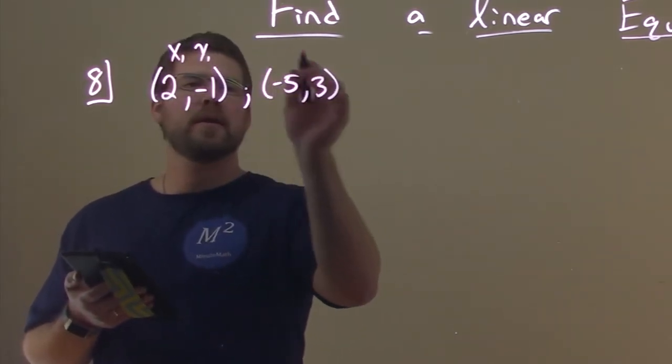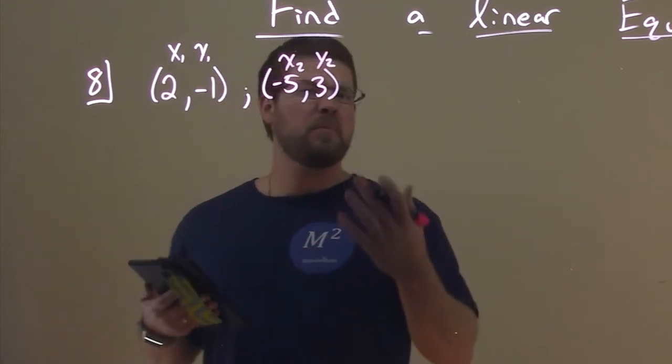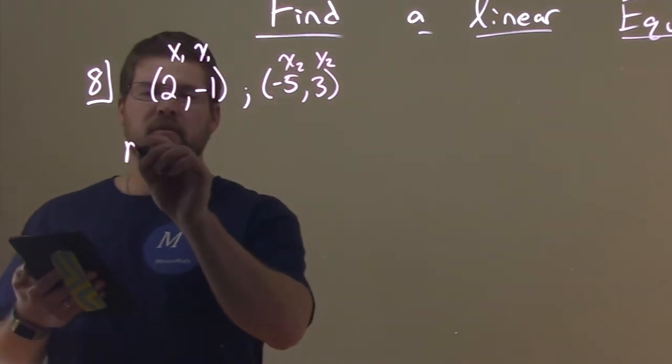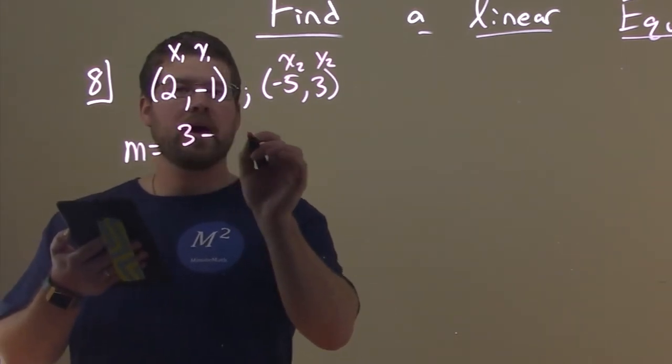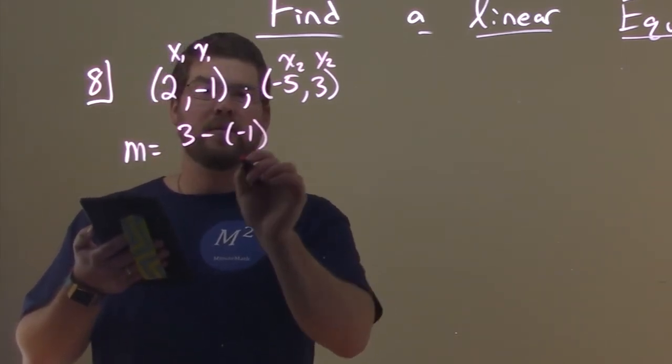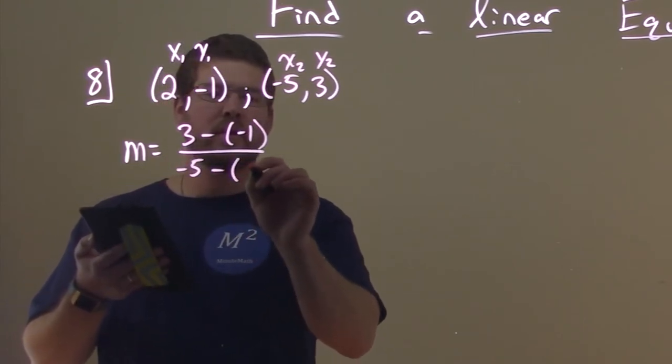So X1, Y1 here, X2, Y2 here. You've done this before, pretty easy for a recap. So our slope here is Y2, which is 3, minus Y1, minus 1, over X2, minus 5, minus X1, which is 2.